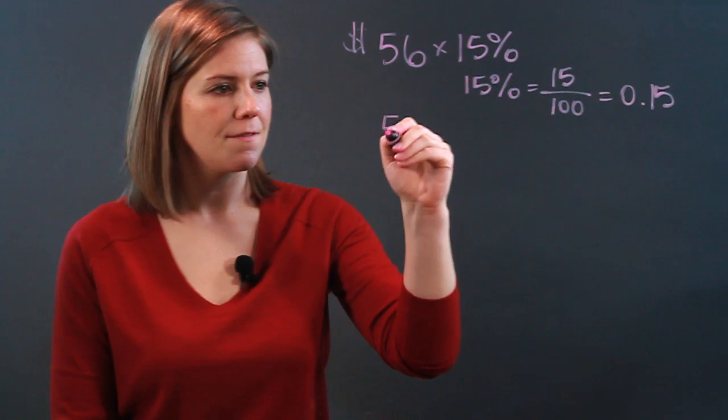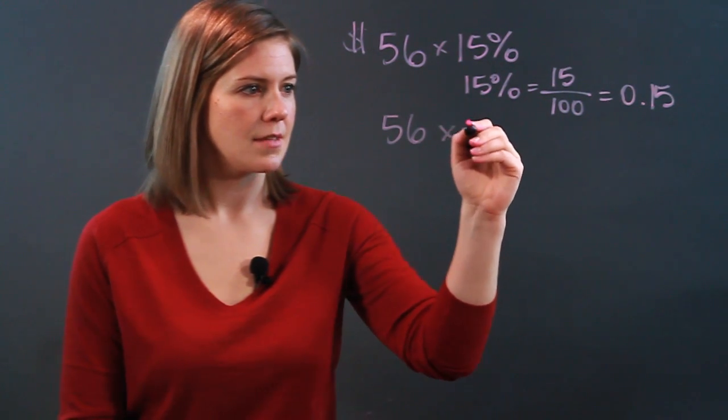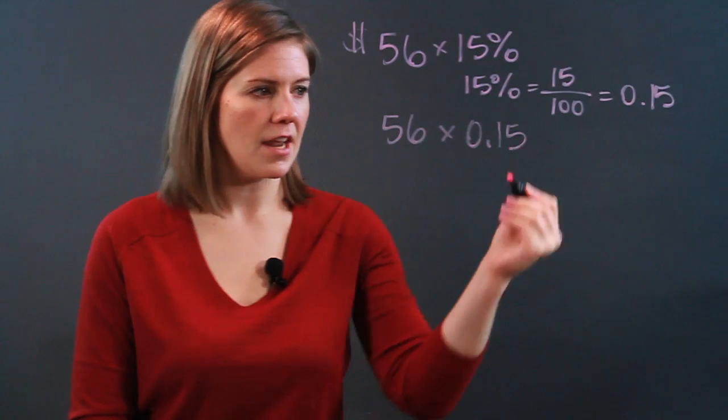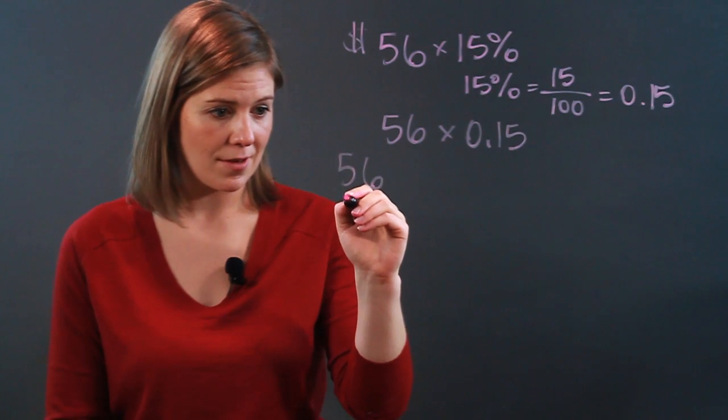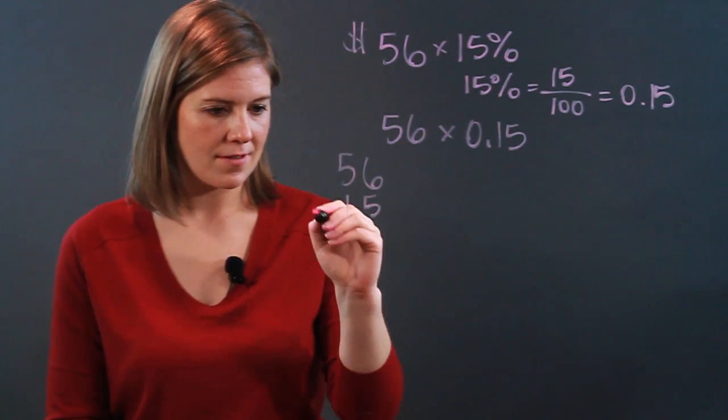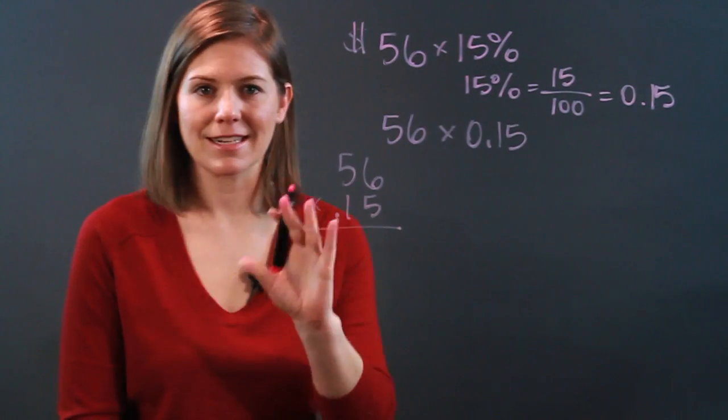Now let's get back to 56 times 15 hundredths. That's easy enough to do. You simply go through the multiplication algorithm. I'm going to take that zero off because it doesn't actually make a difference and it's cleaner here.